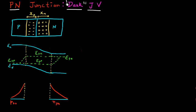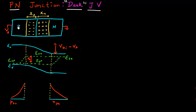Let's start with the case where we are in the dark, so there is no light shining on this PN diode. I can apply a voltage VA across this PN diode, and that voltage essentially results in a reduction of the built-in voltage VBI across this diode. So now the potential difference reduces to VBI minus VA, and all of that applied voltage essentially appears across this depletion region, assuming the P and N regions have decent conductivity.